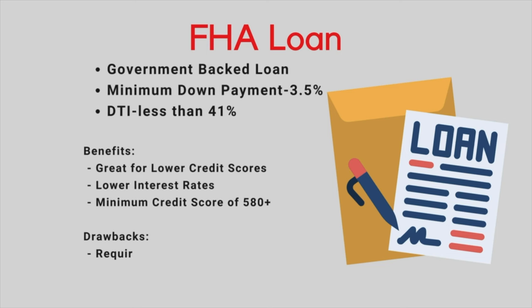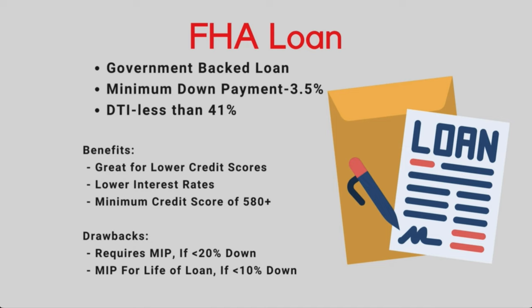One of the main drawbacks to the FHA loan is that it requires mortgage insurance premiums if you put less than 20% down, just like on the conventional loan. The difference is, with the FHA loan, if your down payment is less than 10%, the mortgage insurance premium remains for the life of the loan regardless of how much equity you have. To remove the mortgage insurance, you would have to refinance the loan to a different loan program.